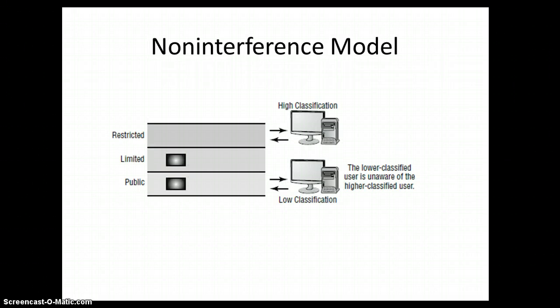The non-interference model is similar, but basically you have different pipes — high class, low class, or whatever classified level it may be — restricted, limited, public. Information stays in its particular swim lane and never the two shall meet. Think of it like SIPRNet and NIPRNet — totally segmented with no way to interfere with each other. That covers access control and identity management. If you have any questions, feel free to contact me at ben.c.magee at gmail.com. Thank you very much.